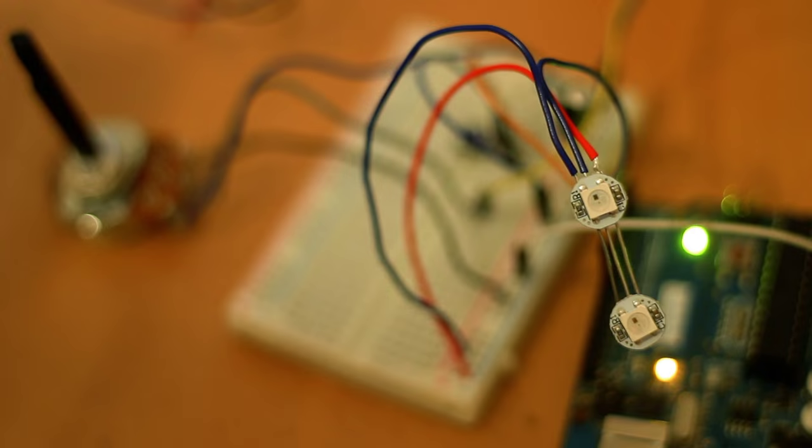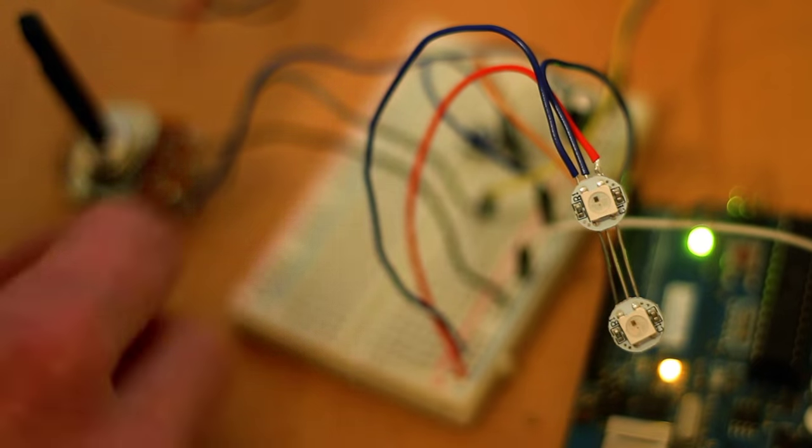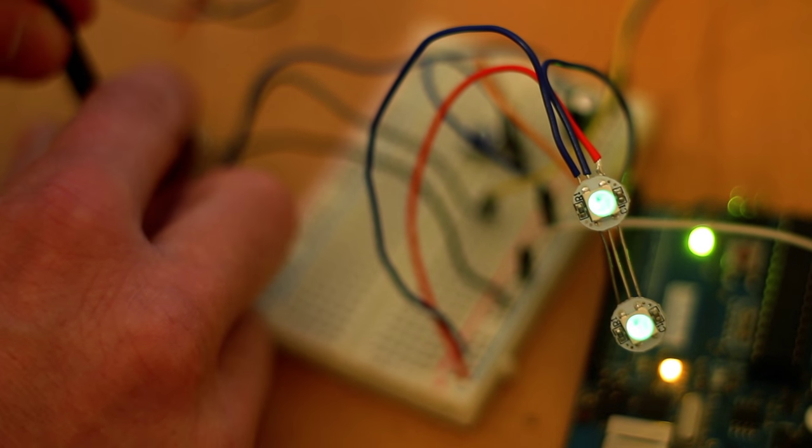Now what happens when we plug 2 in? So we've got the 2 plugged in now. And all I've done with the code is add a for loop to say set this pixel to this color.